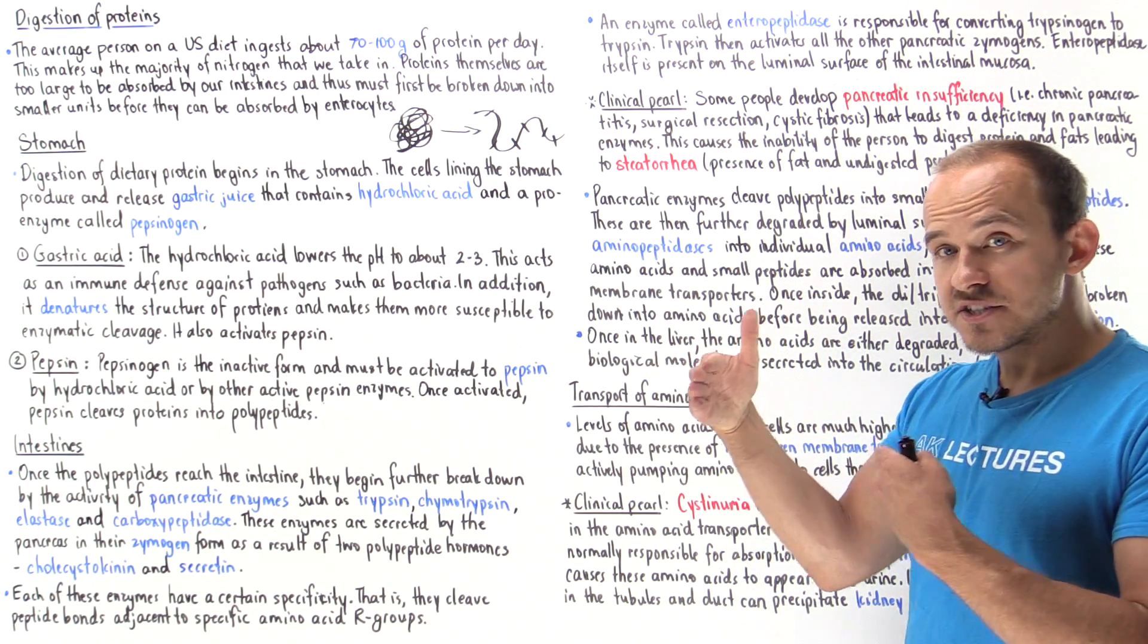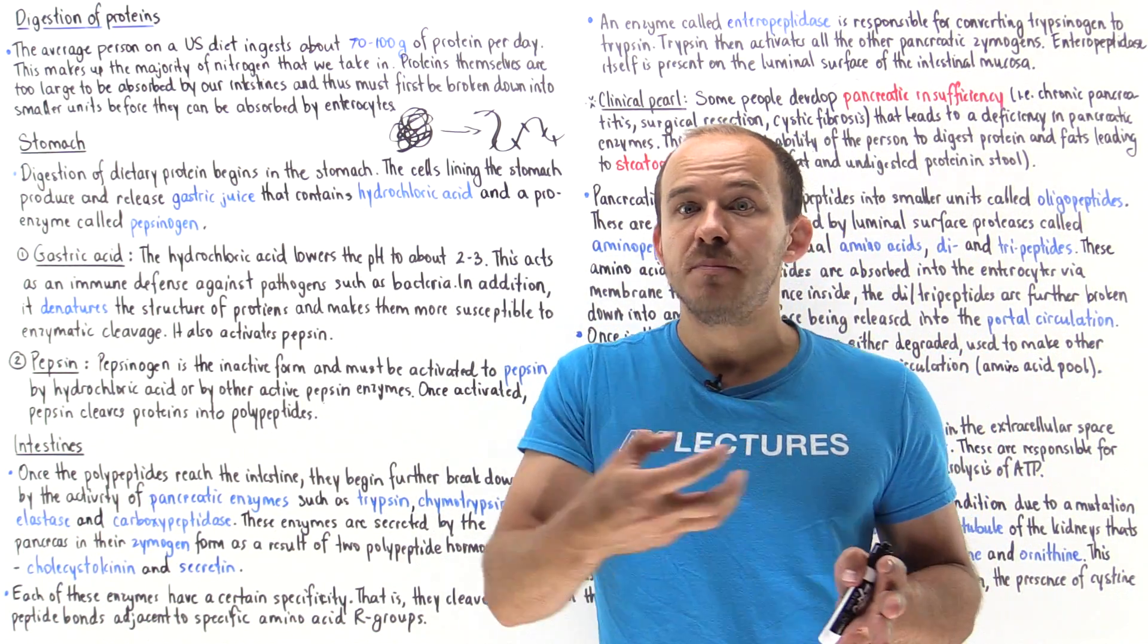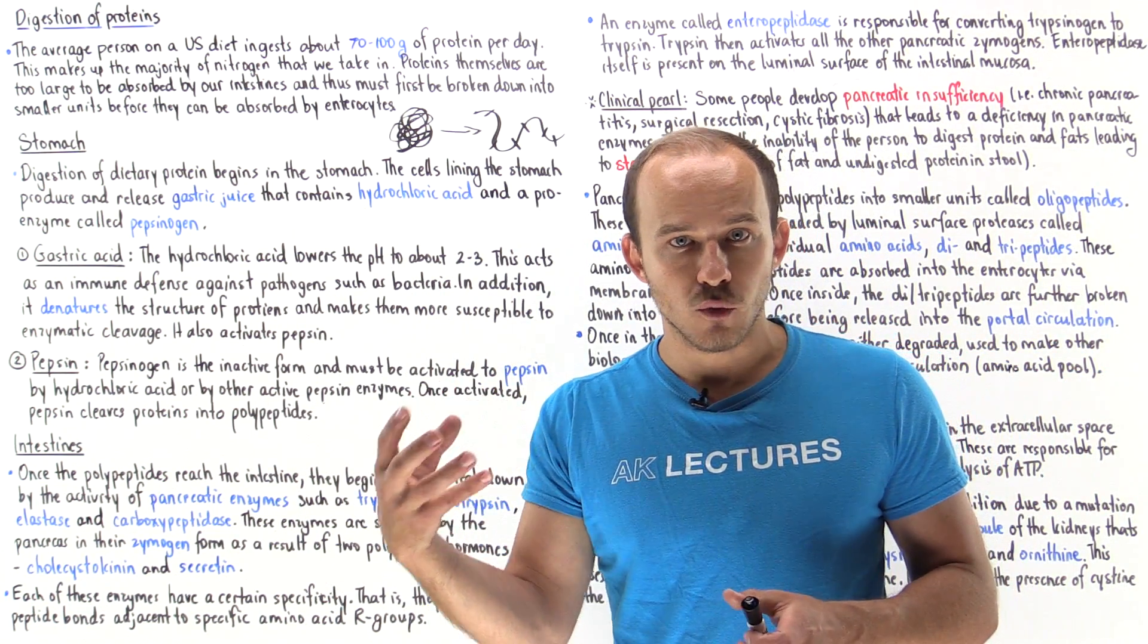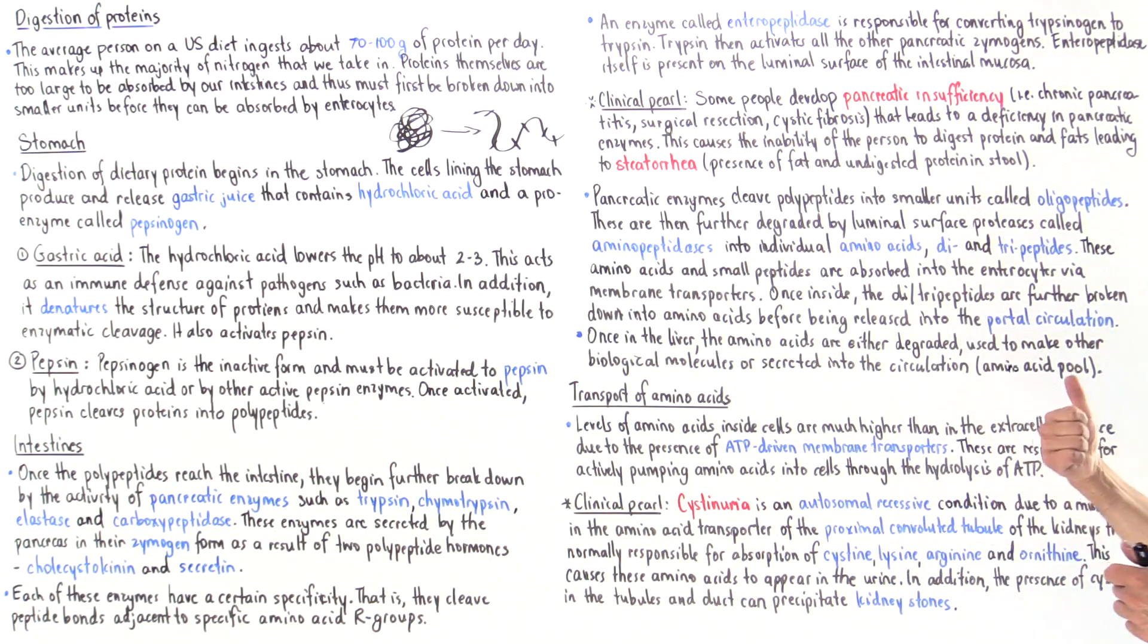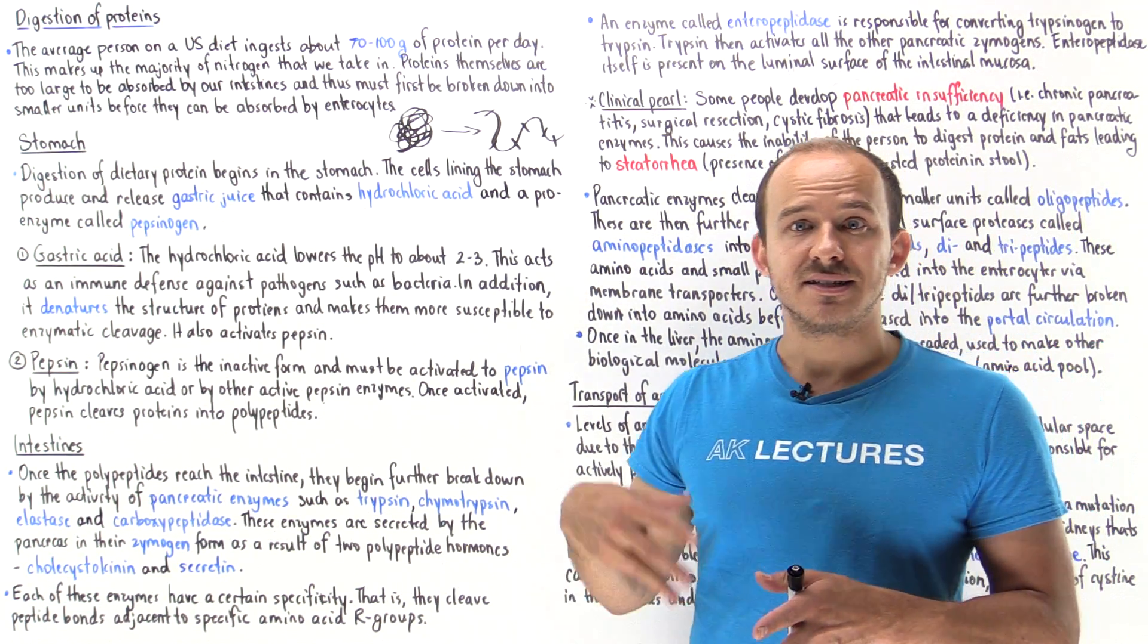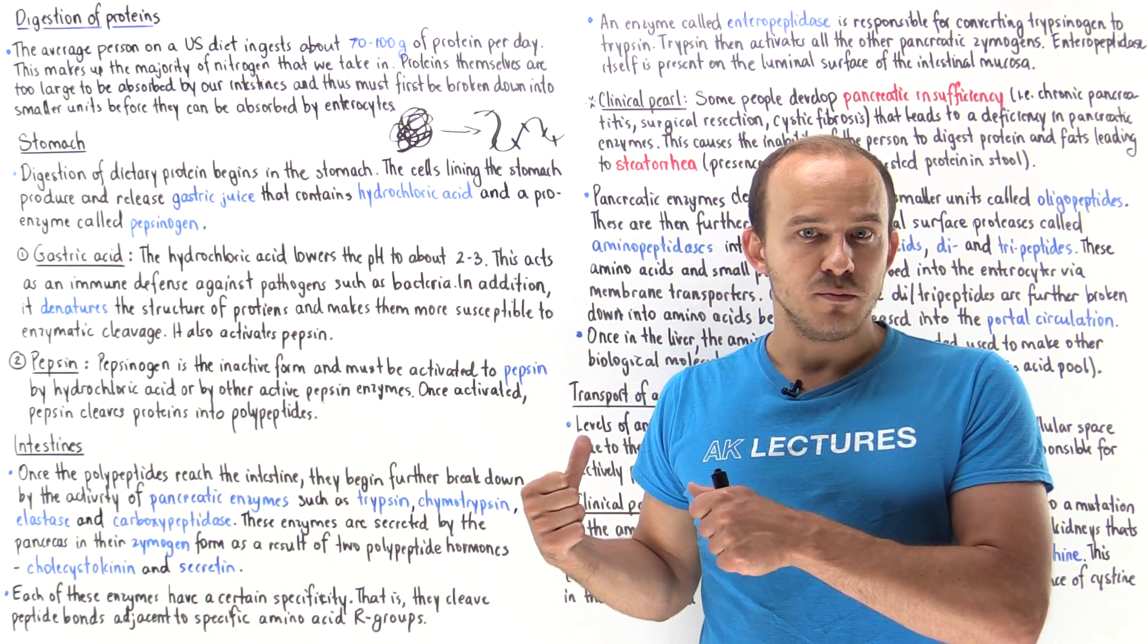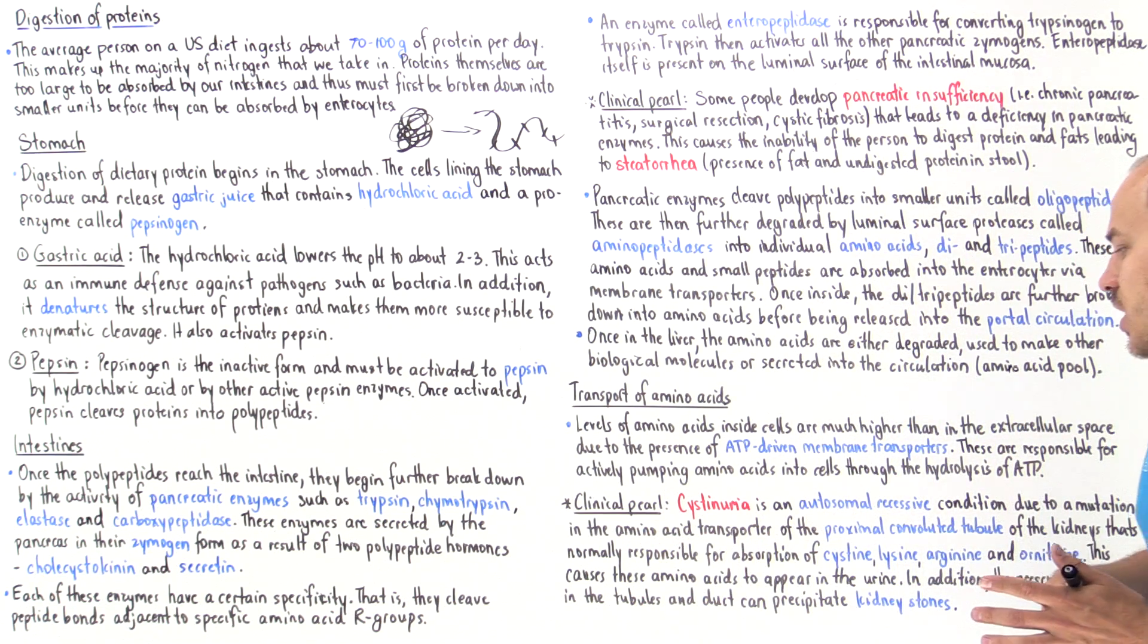In these patients, normally the proximal convoluted tubule should be able to absorb all of these amino acids which are filtered by the glomeruli. But because they don't have or have a defect in this transporter, they can't absorb these amino acids. These amino acids end up depositing within the lumen of the tubules, and that can actually cause the formation of kidney stones—cysteine kidney stones.